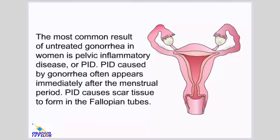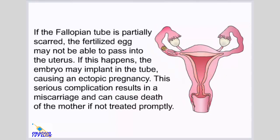The most common result of untreated gonorrhea in women is pelvic inflammatory disease, or PID, which often appears immediately after the menstrual period. PID causes scar tissue to form in the fallopian tubes. If the fallopian tube is partially scarred, the fertilized egg may not be able to pass into the uterus, and the embryo may implant in the tube, causing an ectopic pregnancy. This serious complication results in a miscarriage and can cause the death of the mother if not treated promptly.